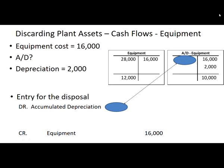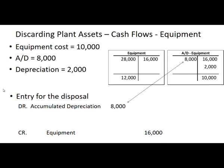The number that goes in the blue box is the same number that's going to help finish up our work on the puzzle. We know the equipment cost; now we're solving the second piece by figuring out how much of accumulated depreciation goes in our entry. We have 18,000 on the debit side and an ending balance of 10, so we must have credited 8,000 in order for the T-account to balance. Accumulated depreciation would have been debited 8,000 when we sold this asset.